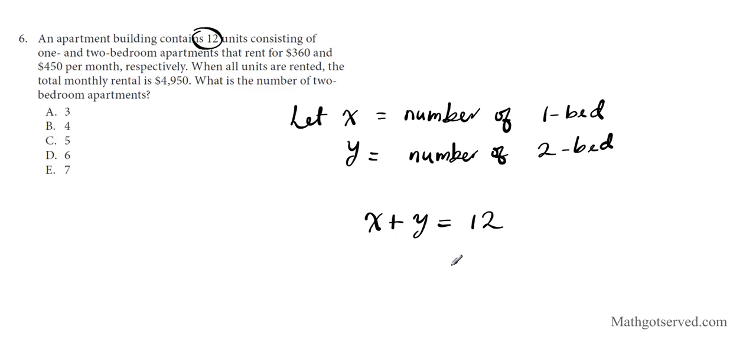This is the number of units equation. Now let's talk about cost. $360 for 1 bedroom and $450 for 2 bedroom. We know that the total price is quantity times unit price. So the price for the 1 bedroom total is going to be the unit price times the total number, which is 360 times x. And for the 2 bedroom, the total price is 450y. After all units are rented, you have a total of $4,950.